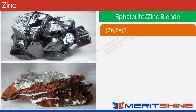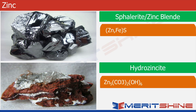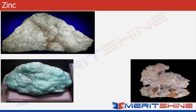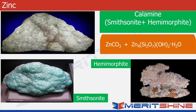Sphalerite, or zinc blende, is a sulphide of zinc along with iron. Then we have hydrozincite which is zinc carbonate and hydroxide. Here we have an interesting case of calamine, which was thought to be just one compound but is actually a combination of two compounds: smithsonite and hemimorphite. Smithsonite is zinc carbonate whereas hemimorphite is a compound of zinc which has silicate and hydroxide.